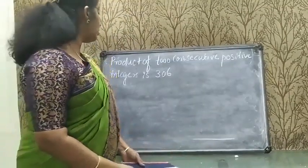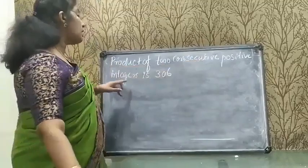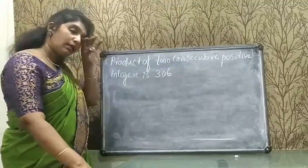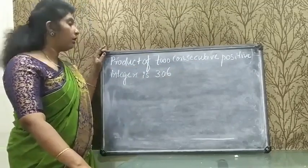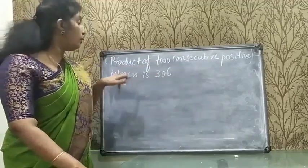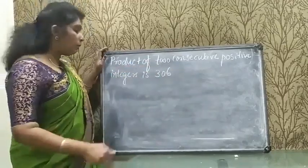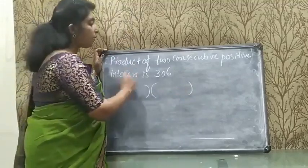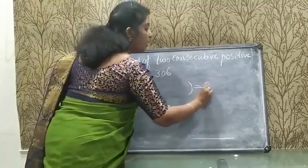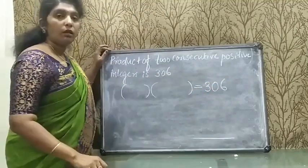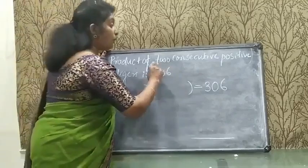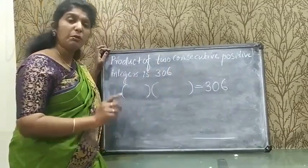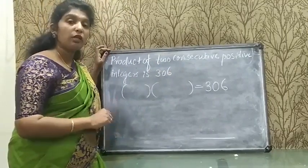The second question: the product of 2 consecutive positive integers is 306. We have to represent this situation as a quadratic equation. The product of 2 integers is 306. What is the meaning of consecutive numbers? The difference between the numbers is 1.